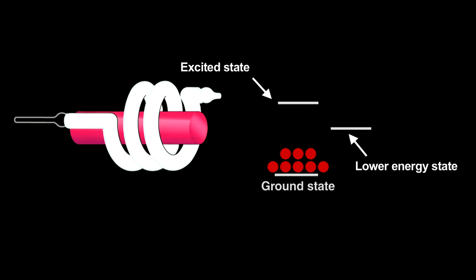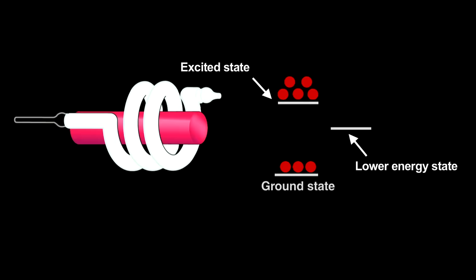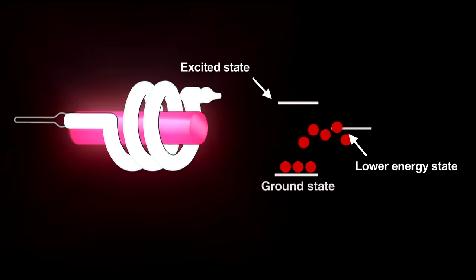To create a laser takes an extremely powerful lamp. In the ruby laser, repeated flashes, called pumping, make something amazing happen. They supply so much energy that a population inversion occurs. Here, more electrons in the energy level just above the ground state than in the ground state.